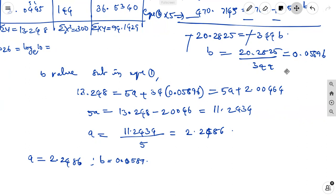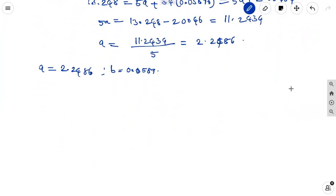And we apply the values. We know that log a is equal to a only. That is nothing but a is equal, log a equal to 2.2486. From this a is equal to exponential 2.2486 is equal to 9.4725. And b is equal to 0.0589.